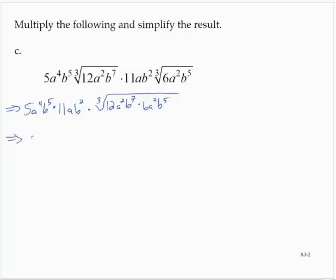So that would give me 55a to the 5th b to the 7th times the cube root of 72a to the 4th b to the 12th. I have a cube root, so I'm looking for perfect cube factors, 72 is 8 times 9, a to the 4th is a cubed times a, and b to the 12th is a perfect cube.